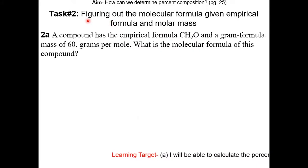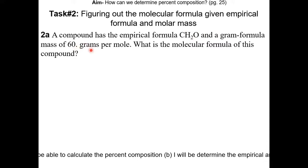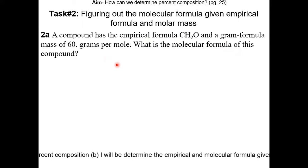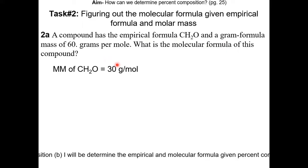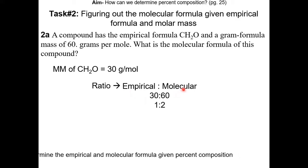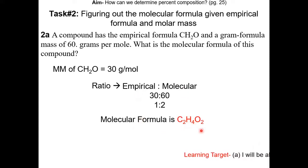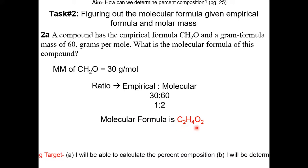In the next part of the lesson, we'll be figuring out the molecular formula given the empirical formula and the molar mass. Question 2a: a compound has an empirical formula of C2O and a gram formula mass of 60 grams per mole. What is the molecular formula? The first step is to figure out the GFM of the empirical formula, which is 30 grams per mole. The next step is to find the ratio between the GFM of the empirical and molecular formula, which is 1 to 2. So the molecular formula is double the empirical formula: C4O2. This molecular formula should have a GFM of 60 grams per mole.